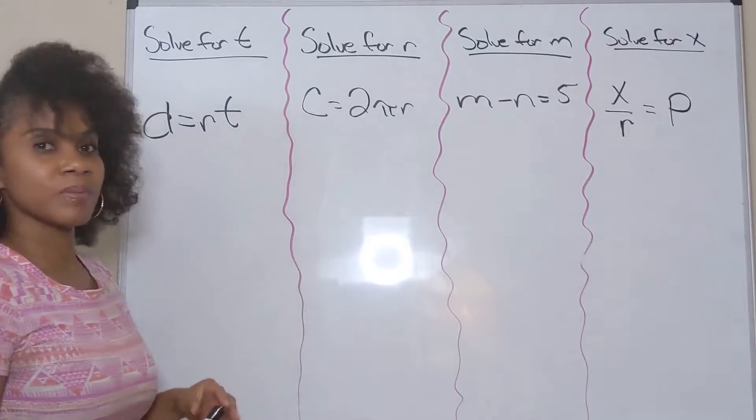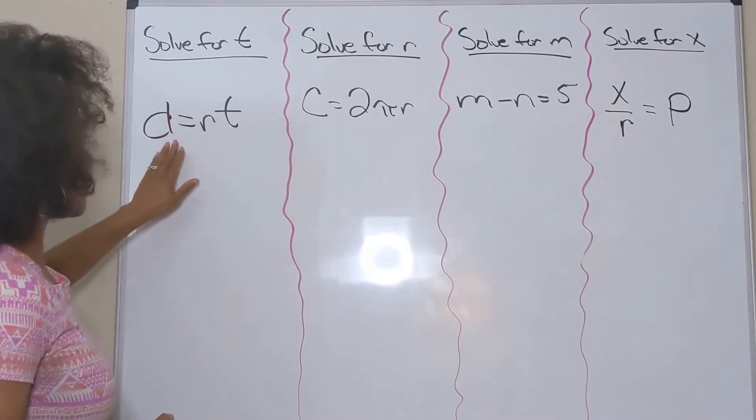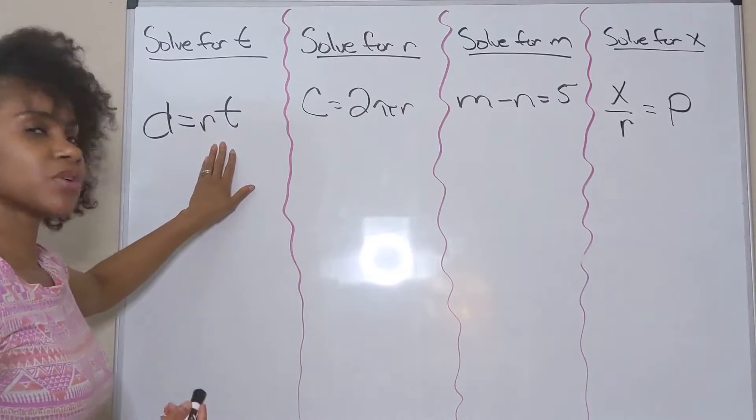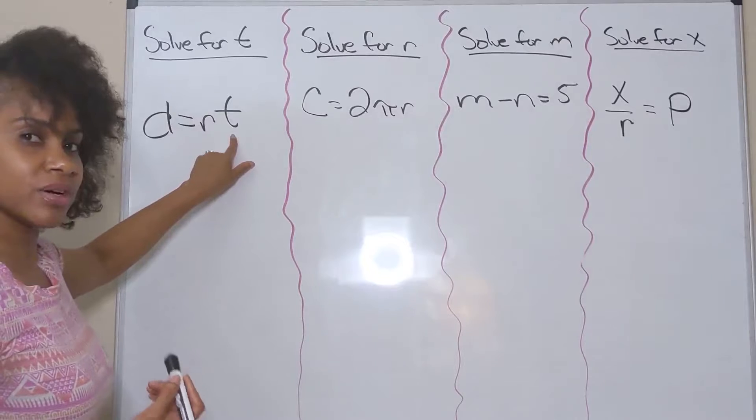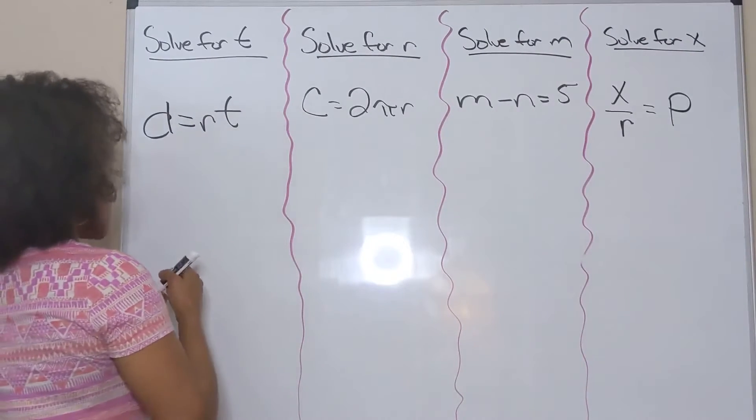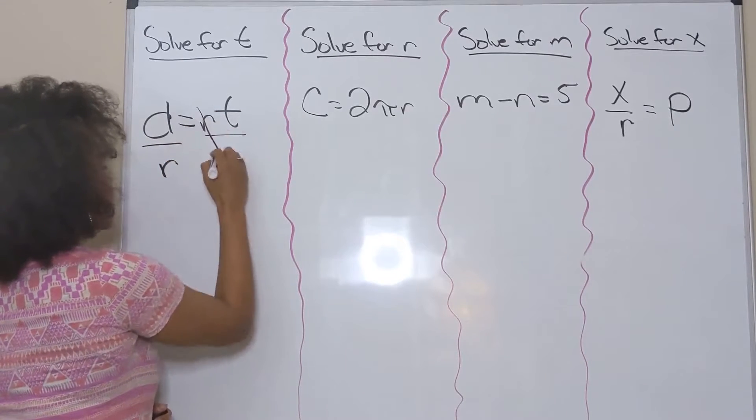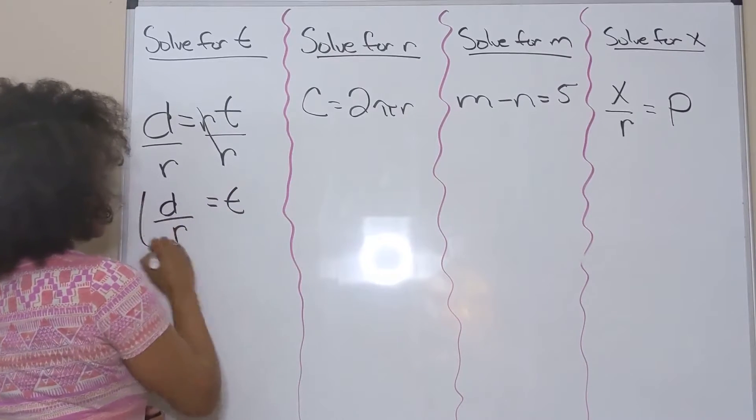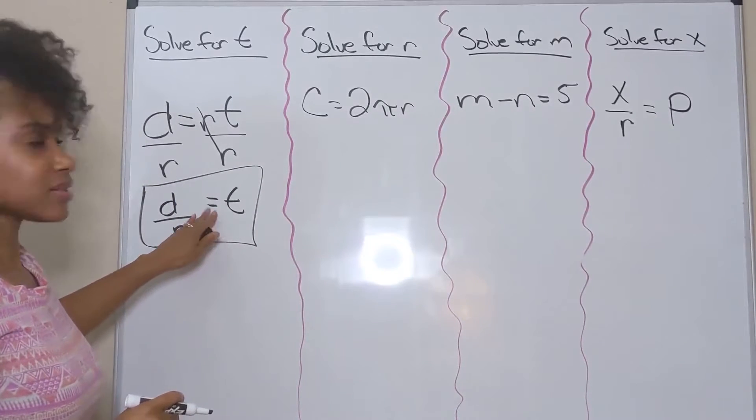Let's try these. Here we have solve for t, and we read this as d=rt. What's the inverse of multiplication? The inverse of multiplication is division. Our goal is to isolate the t or get it by itself on one side. If I read this as r times t, I simply divide both sides by r, cancel it out, and I'm left with d/r=t. I have rewritten that equation solving for t, and that is my answer.